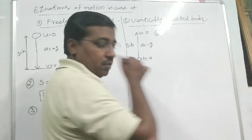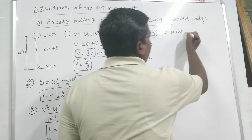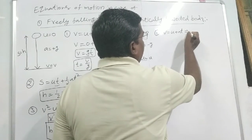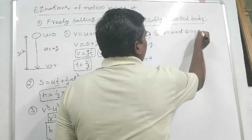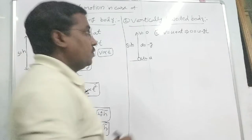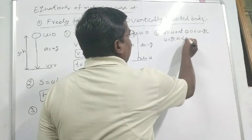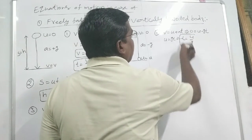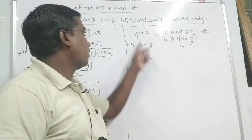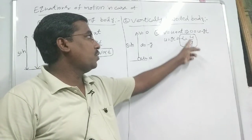The first equation of motion is V = U + aT. Here V = 0, U = U, and A = −g, so 0 = U − gT. This gives the time of ascent T = U/g. Time of ascent is the time taken by the body to reach maximum height from the ground.